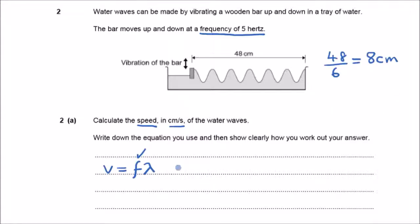Now, so we now know the wavelength. It's eight centimeters. So, what we have to do is take the frequency, which is five hertz, multiply that by the wavelength, which is eight centimeters. And that gives us 40 centimeters per second for the speed.